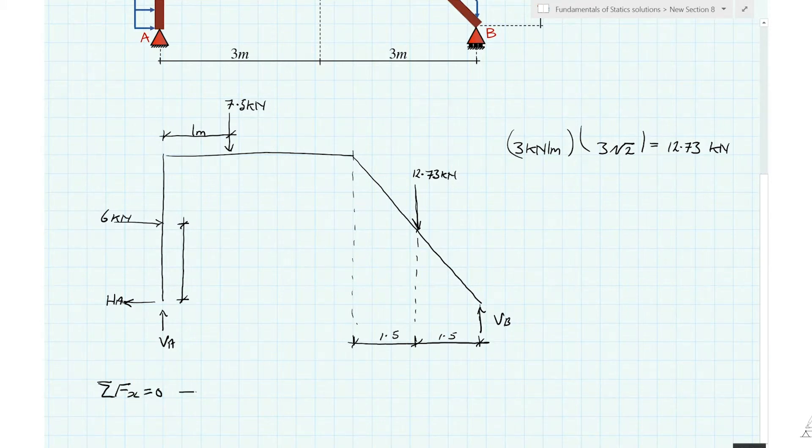Okay, so we can straight away see that HA is equal to six kilonewtons. We're simply balancing this force with this reaction. There's no other horizontal forces.